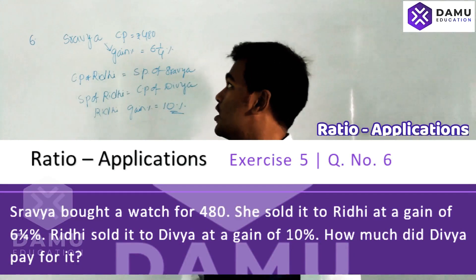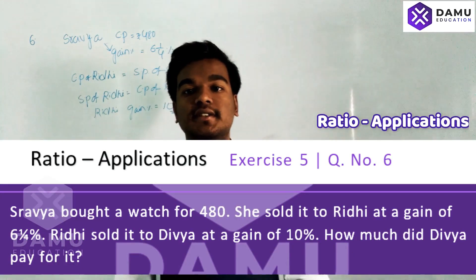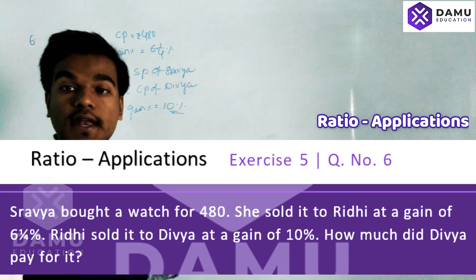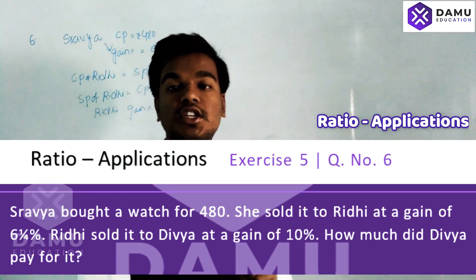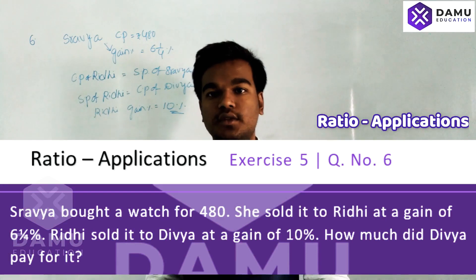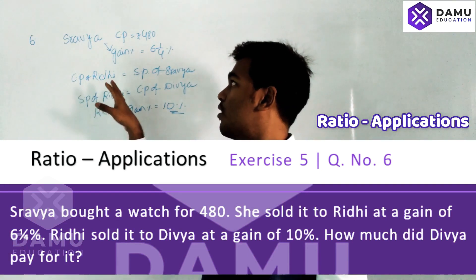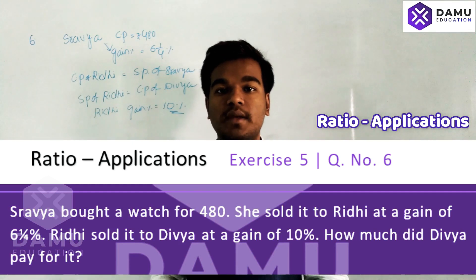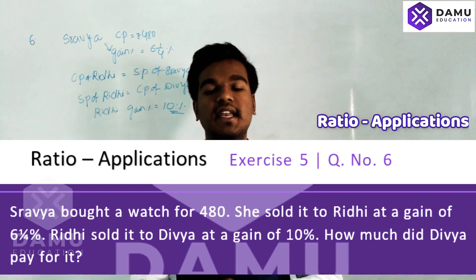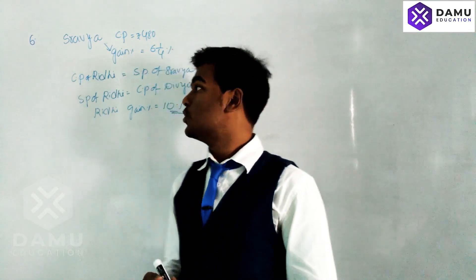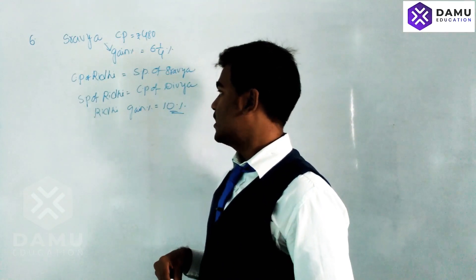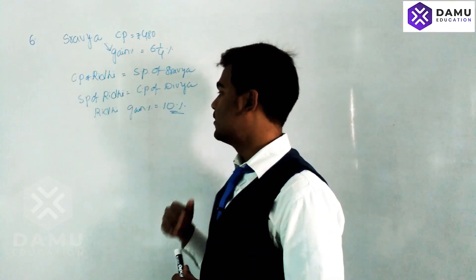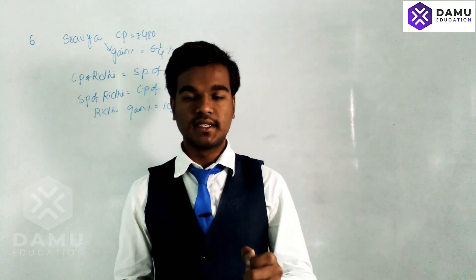The next question: Shravia bought one watch at a cost price of 480 rupees and sold the same watch to Riti at a gain percentage of 6¼%. So the selling price of Shravia will be equal to the cost price to Riti, because how much amount she paid is the selling price for Shravia. After that, Riti sold at 10% gain to Divya, so the selling price of Riti will be equal to the cost price to Divya.